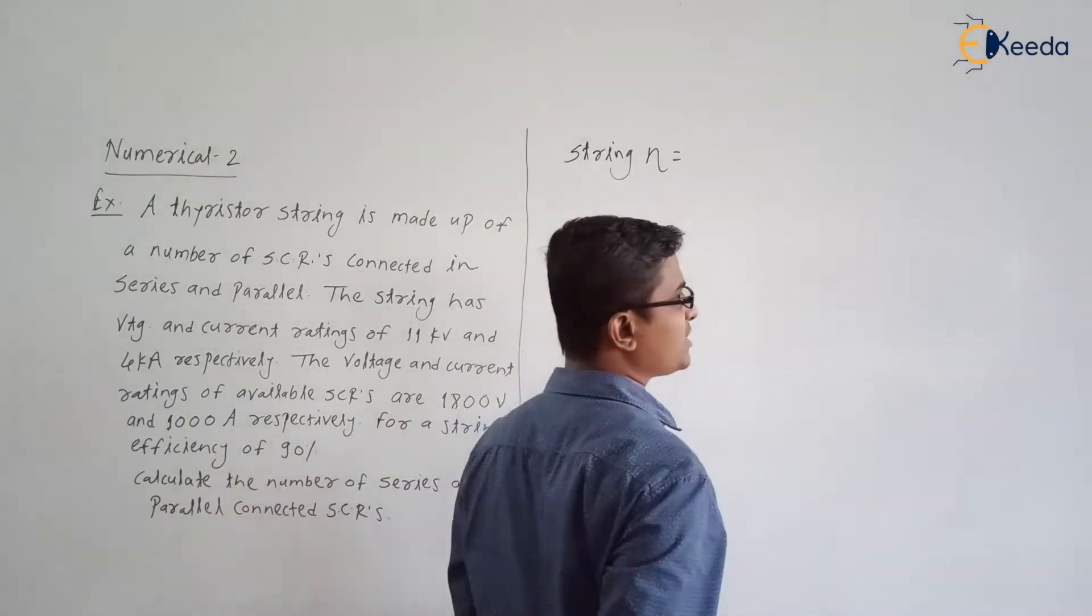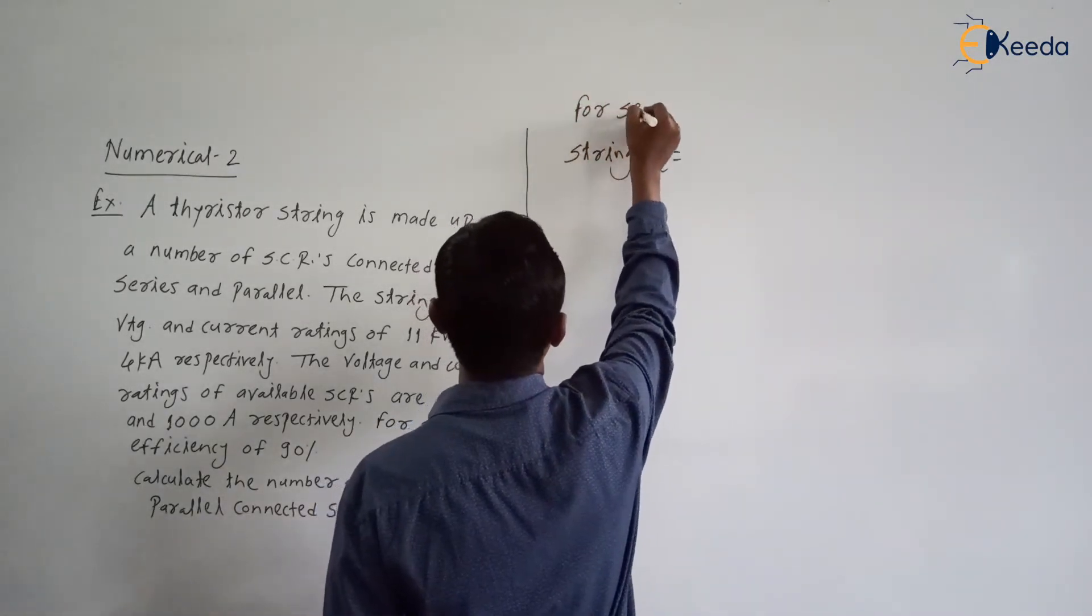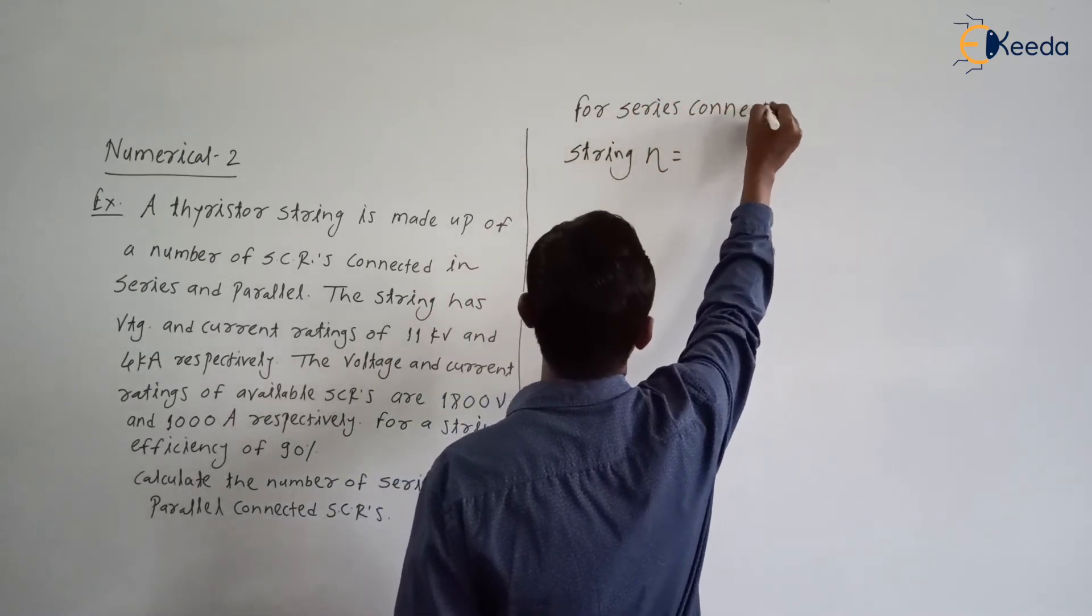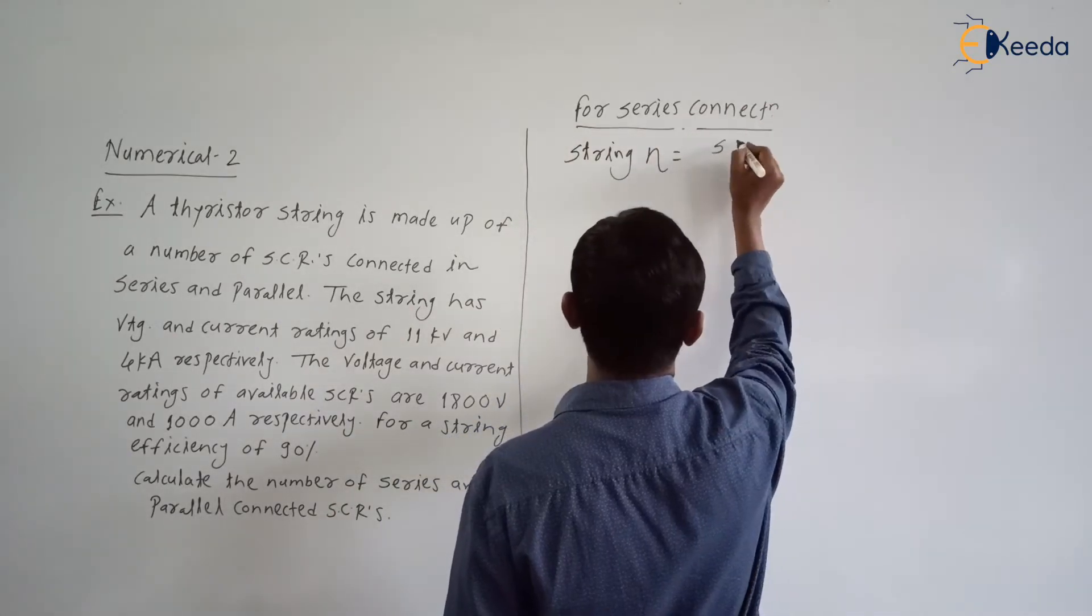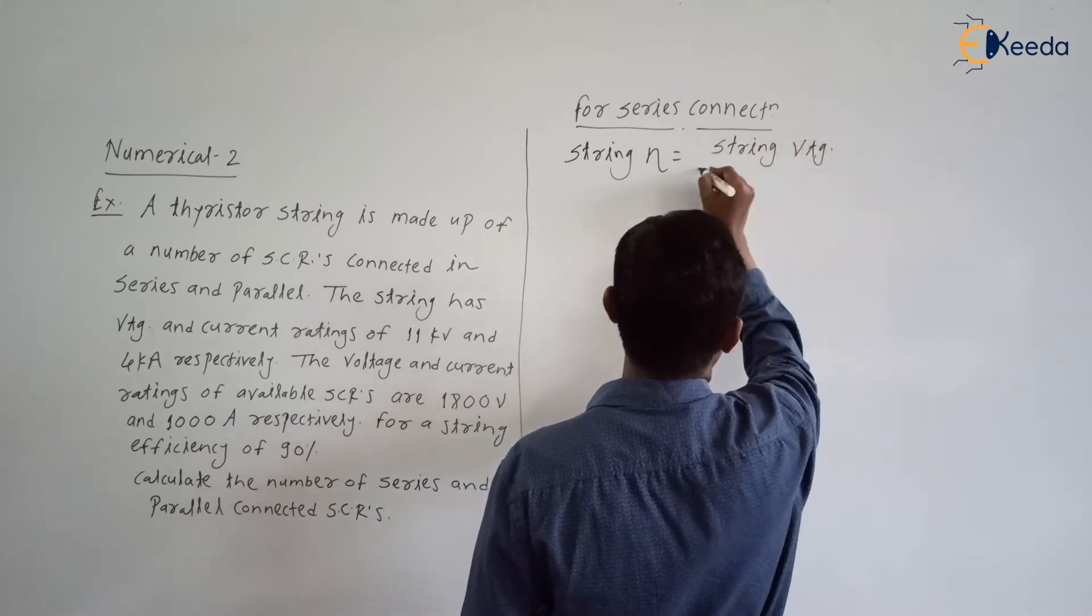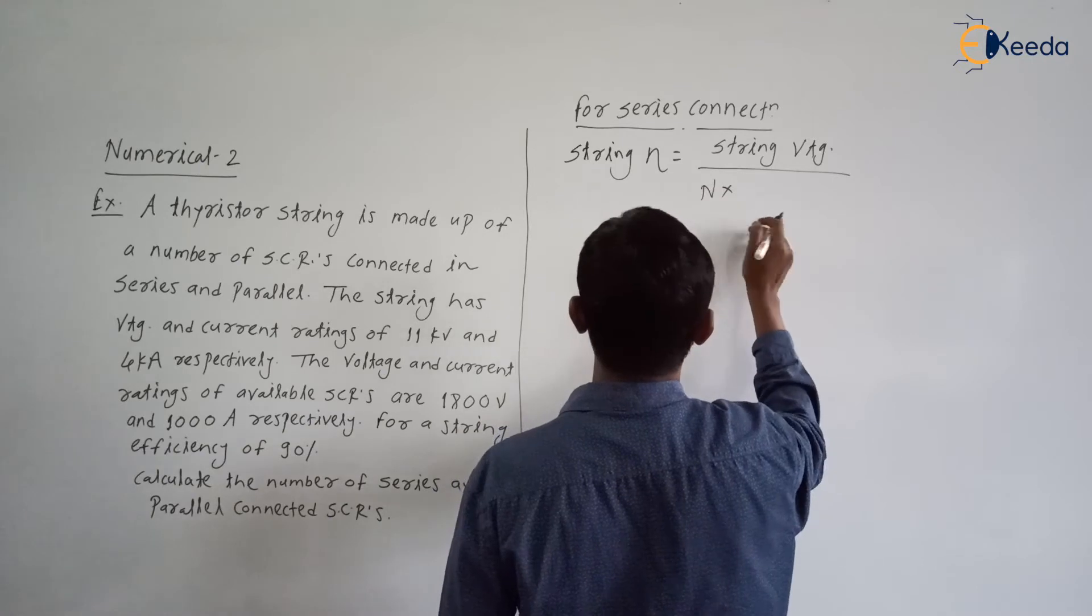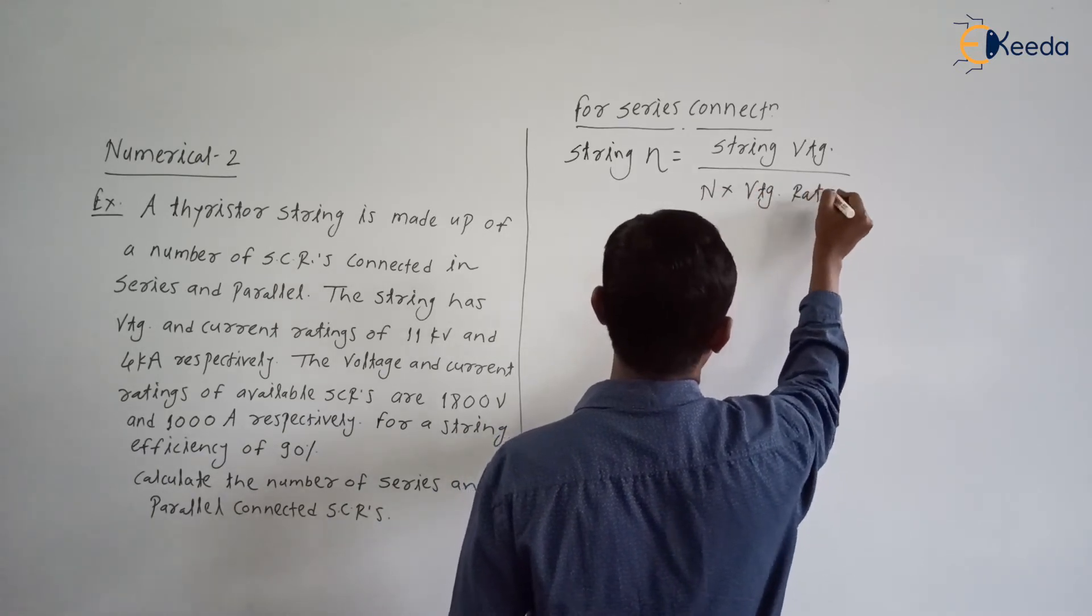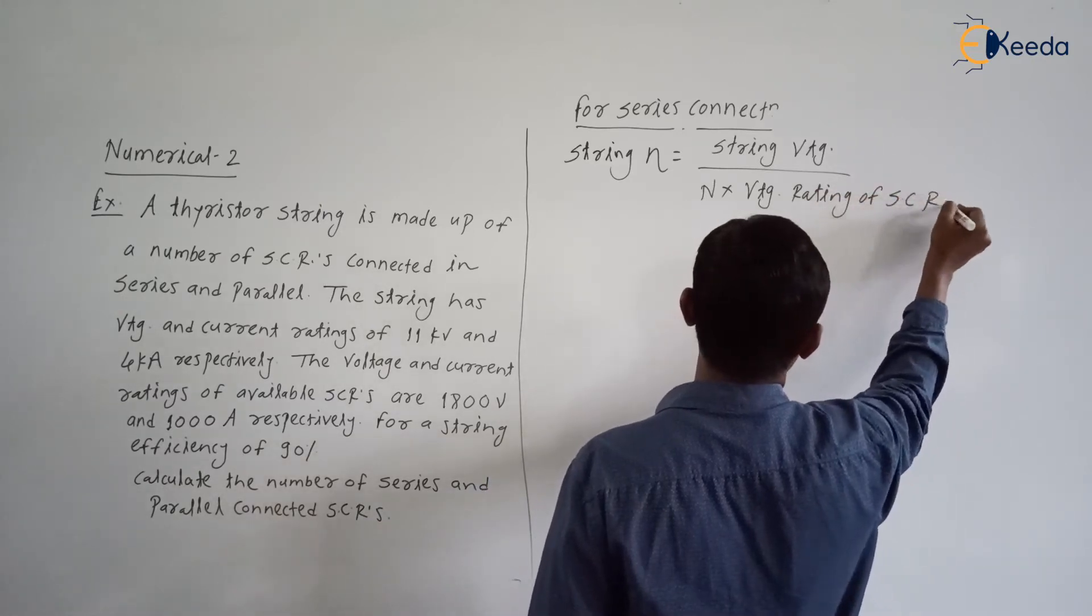Let us first find for series connection. For series connection of SCRs, string efficiency equals string voltage rating divided by n into voltage rating of SCR. Are you getting the point?